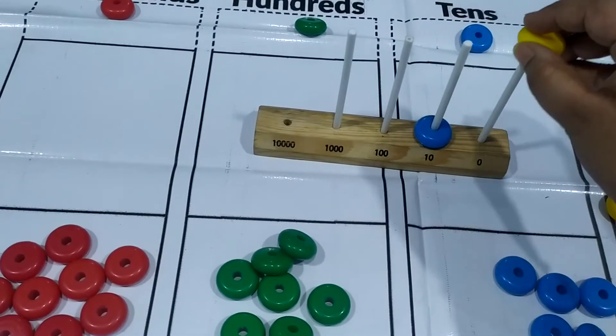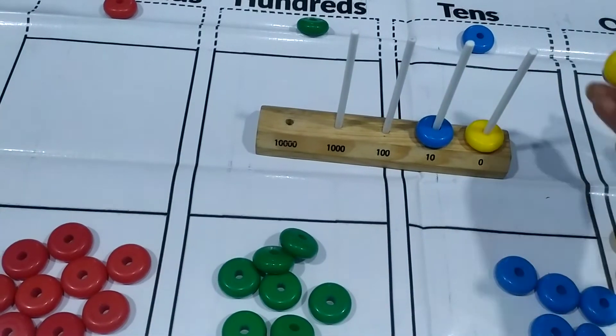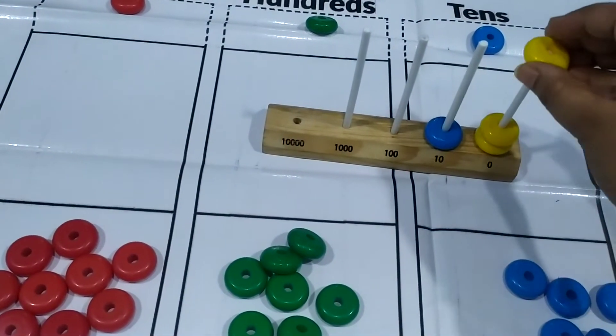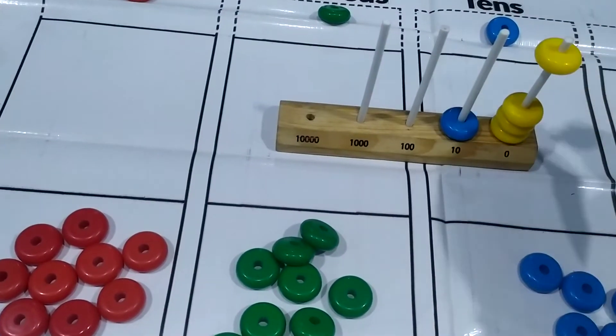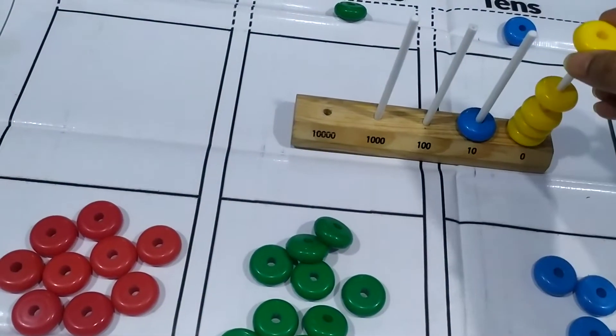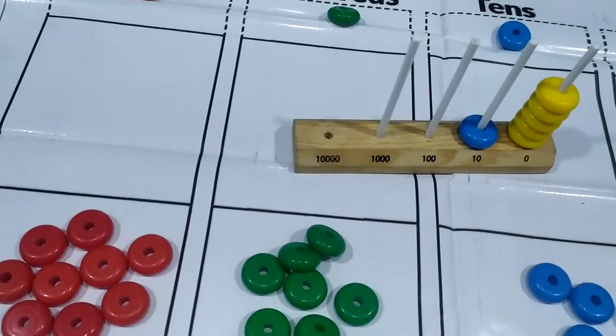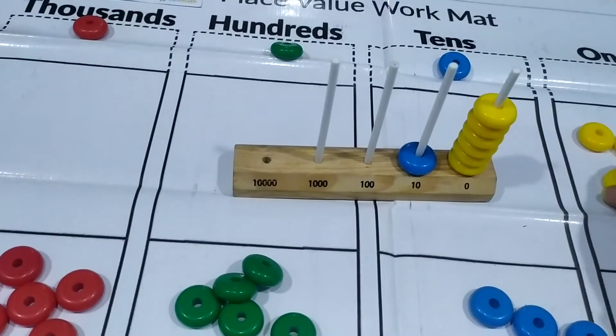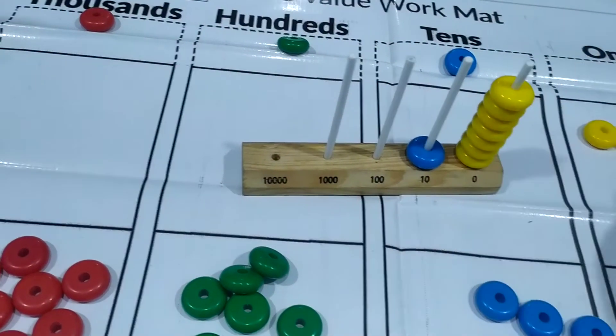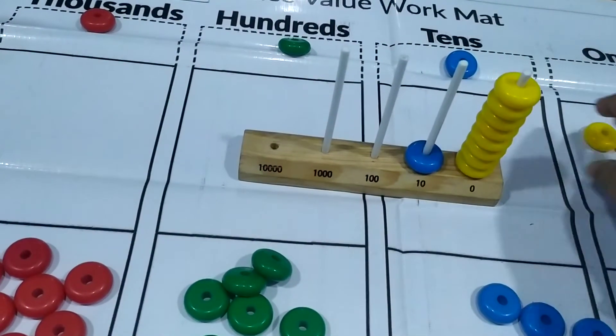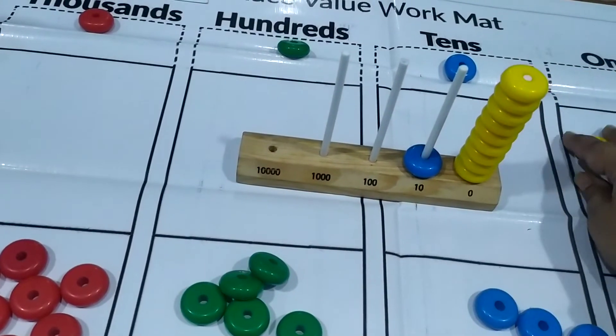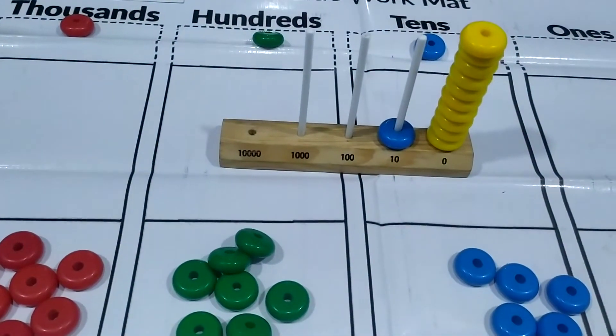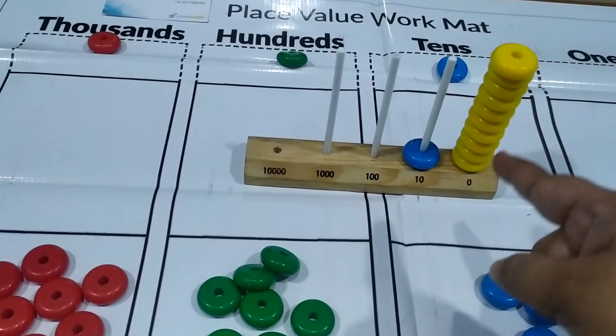Then again, eleven, twelve, thirteen, fourteen, fifteen, sixteen, seventeen, eighteen, nineteen and if I add one more, it will become a twenty.